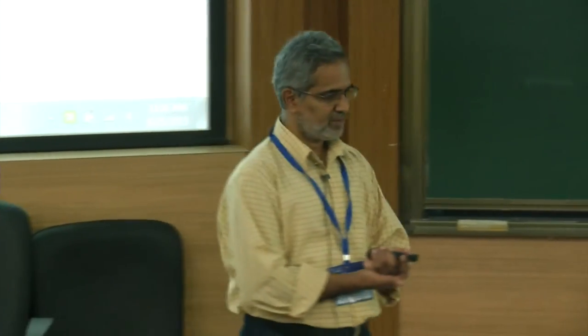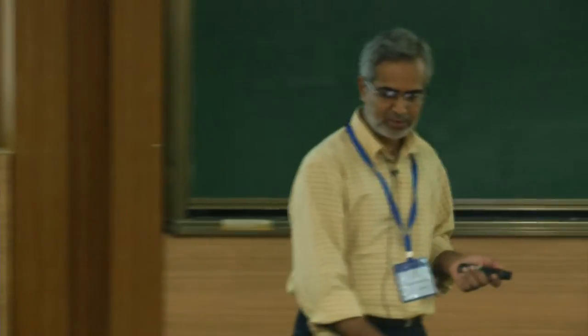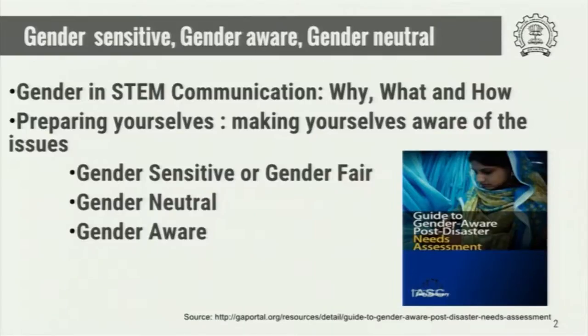The first two presentations gave a general introduction to these issues. We are now going to go into specifics — how exactly we can address sensitivity issues in academic communication. We are going to look at best practices and worst practices, examining why, what, and how. We have discussed gender and diversity issues. We will start with gender, then move to other diversity issues — specifically ethnicity, age, and disability.